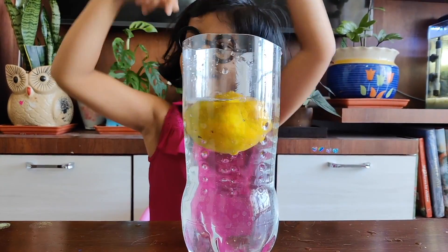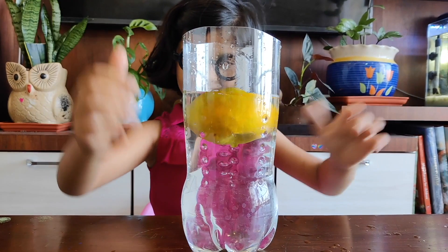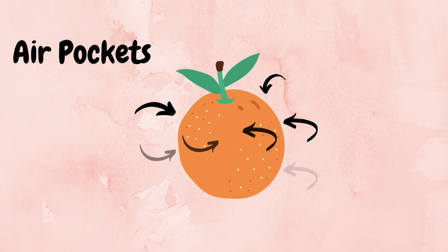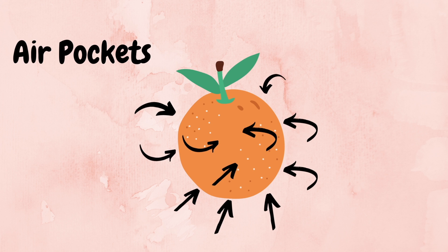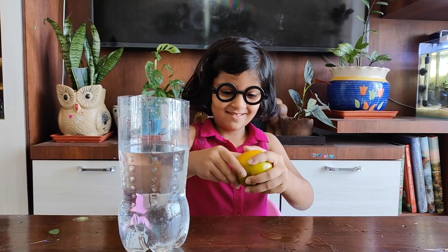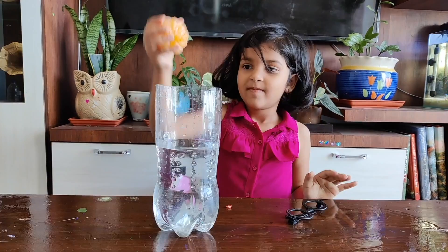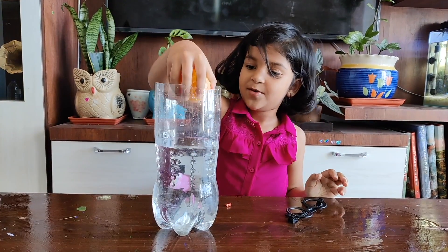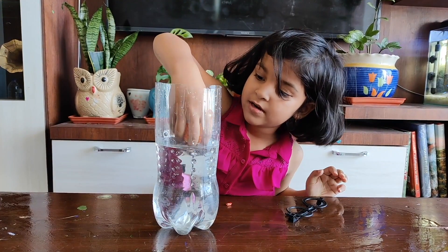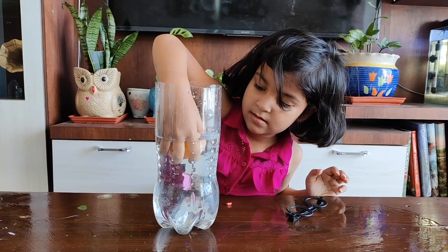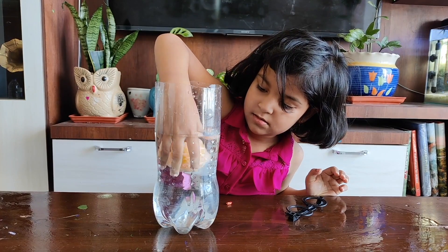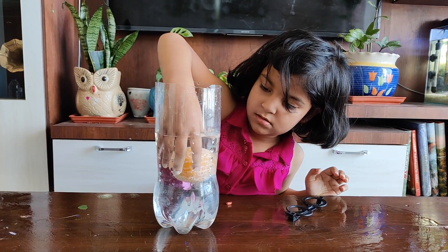The unpeeled orange floats in water because its outer orange skin has a lot of air pockets in it, which means that this skin has lower density than the water. But when you remove the skin, the air pockets that help the orange float are also gone, and so it sinks.